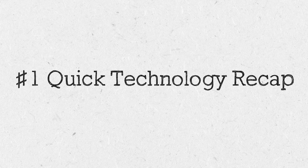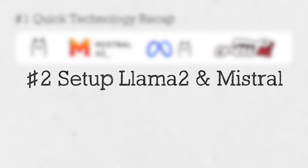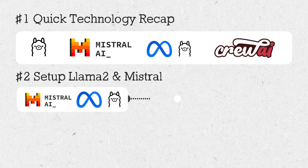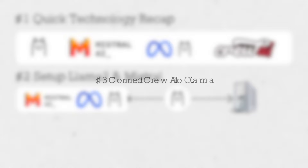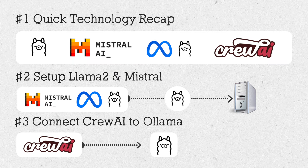Here are the three major parts of this video. First, we're going to do a quick recap of the four technologies that we're going to be using in this video, just to make sure we're on the same page. Second, I'm going to show you how to set up and run Llama 2 and Mistral on your machine using Ollama. And third, we're going to connect Crew AI to Ollama so you can see everything in action.